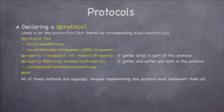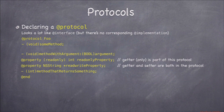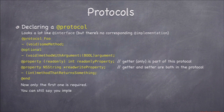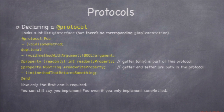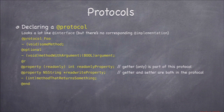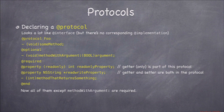The methods in a protocol are by default all required, meaning if someone wants to say they implement this protocol, they have to implement all these methods. You can make some optional by putting @optional in there. After that, all the following methods are optional. You can also put @required again lower down to make subsequent methods required again. So you're basically defining a pile of methods, some required and some optional.